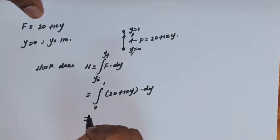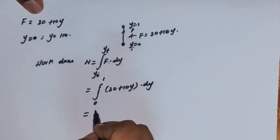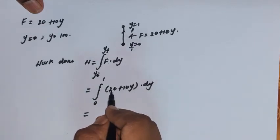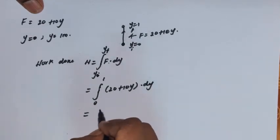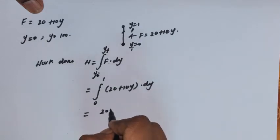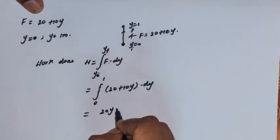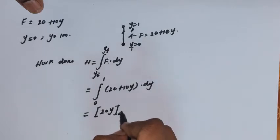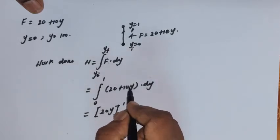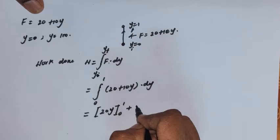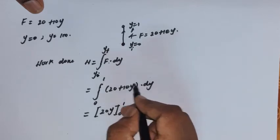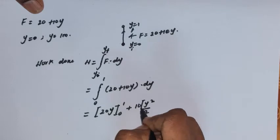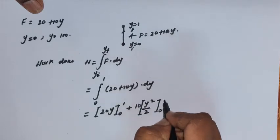Integrating directly: integrating 20 dy gives 20y, with the limit from 0 to 1. Plus, integrating 10y dy — taking 10 out, integrating y dy gives y-squared by 2, with the limit from 0 to 1.